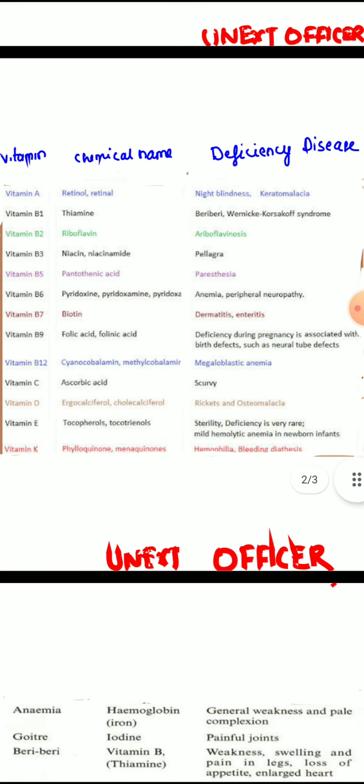About vitamin B2 or riboflavin deficiency: it causes a disease called ariboflavinosis. Ariboflavinosis is characterized by chelosis and angular stomatitis. Chelosis is dry, cracked lips and angular stomatitis is a lesion at the corner of the mouth.